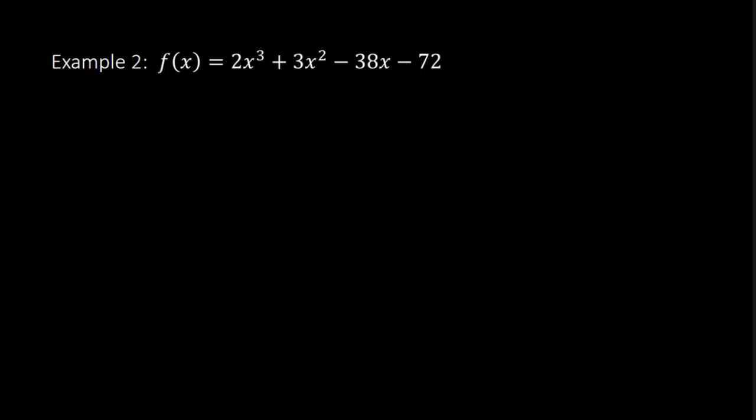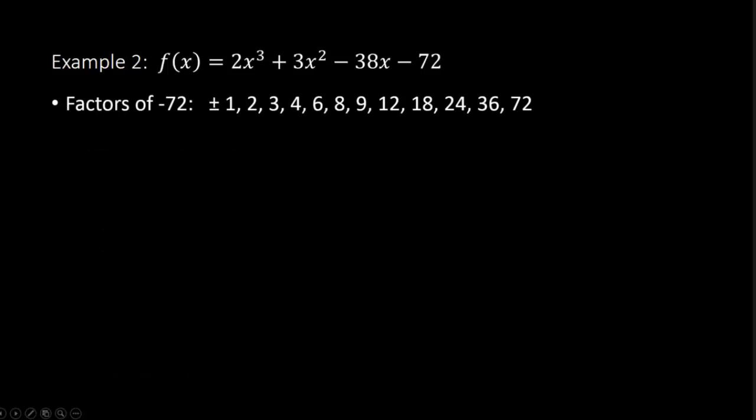Let's look at the function 2x³ + 3x² − 38x − 72. The possible rational zero list is going to be much longer than in the first example. The factors of the constant term −72 include ±1, 2, 3, 4, 6, 8, 9, 12, 18, 24, 36, and 72. The factors of the leading coefficient are ±1 and ±2.